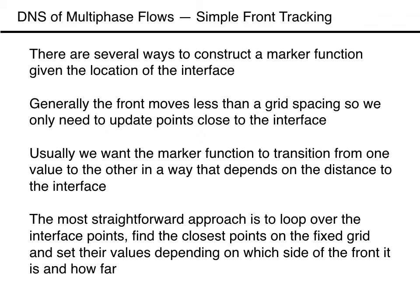There are several ways to construct a marker function given the location of the interface, but in all cases the easiest way is to look over the interface points, find the closest points on the fixed grid and set their values depending on whether they are on the right or left side of the front. Usually the front moves less than one grid spacing so we only need to update points close to the interface. We generally want the marker function to transition from one value to the other in a smooth way that depends on the distance to the interface.